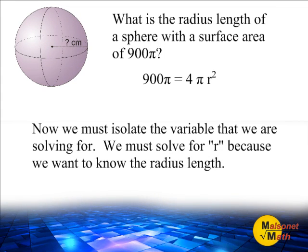Now that we have entered into our equation the information that is given, we must isolate the variable that we are solving for. We must solve for r because we want to know what the radius length is.